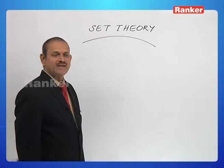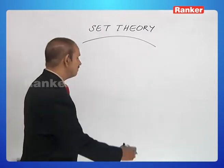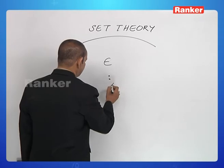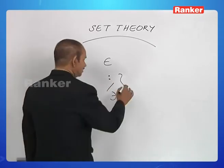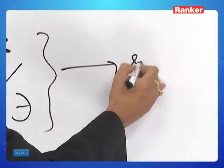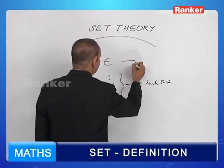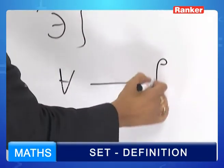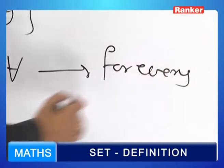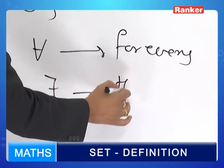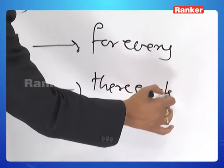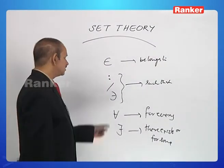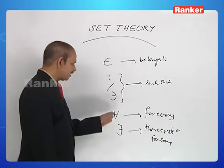Before dealing with the remaining concepts in set theory, let us recall some standard symbols. The symbol ∈ means 'belongs to.' The symbols ∋, :, or | are used to mean 'such that.' The symbol ∀ means 'for every.' The symbol ∃ means 'there exists,' or equivalently 'for some.' The symbol ∋ (or :) means 'such that.'